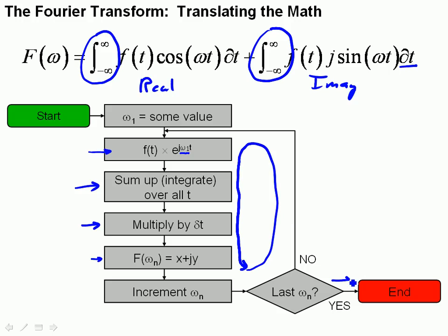And when we're done, we simply exit our algorithm. And what we get is F(ω) that tells us the amplitude of the real part as a function of frequency, and an imaginary part, which is the amplitude of the sine part, as a function of frequency.